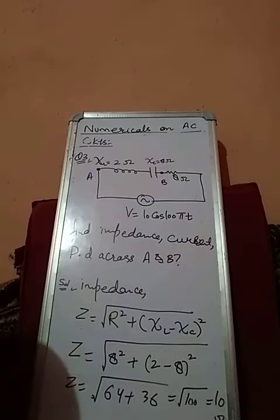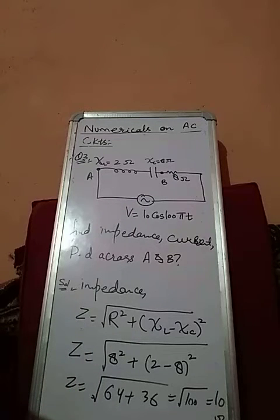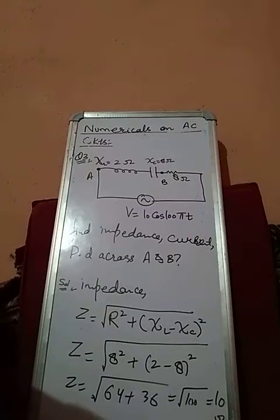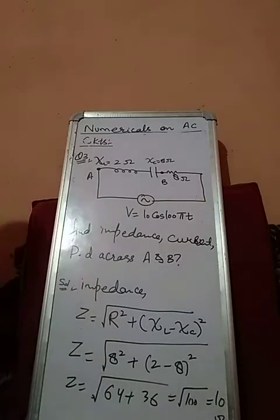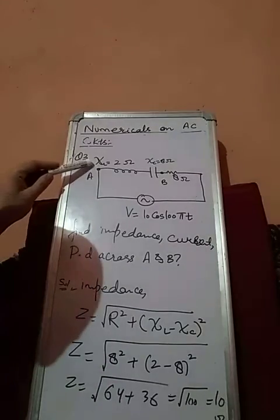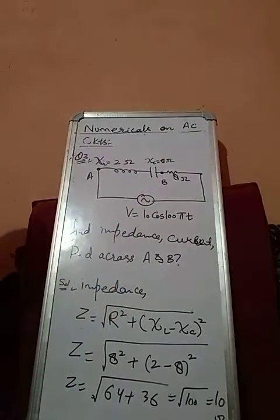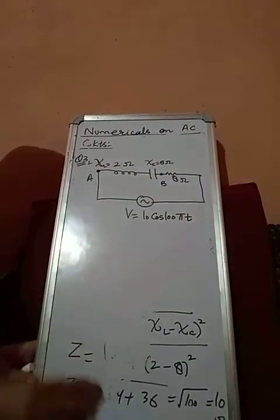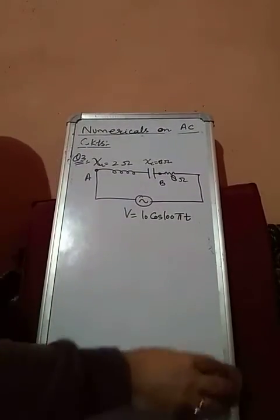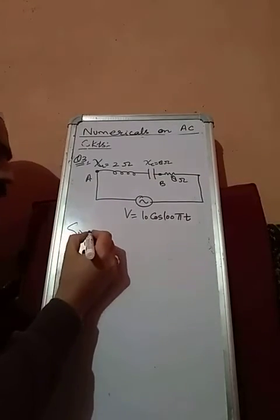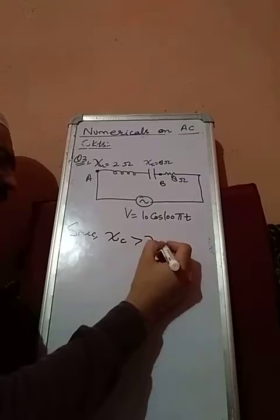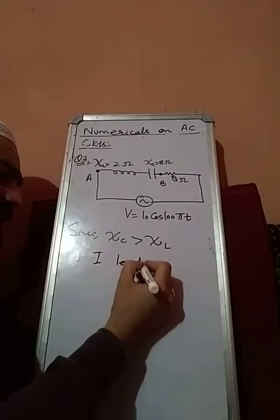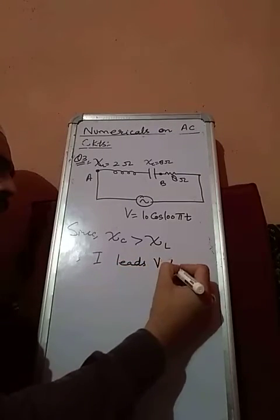Here chi C is greater than chi L. You will see carefully that chi C is greater than chi L. So this is capacitor dominating. Therefore current leads voltage by phi.